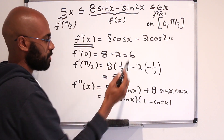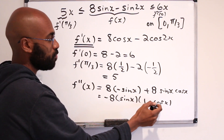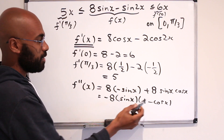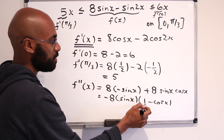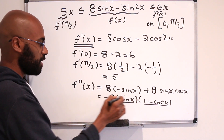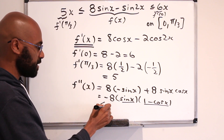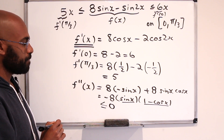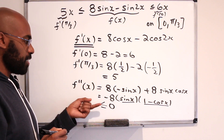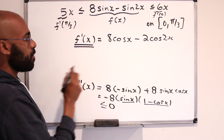On the interval [0, π/3], sin(x) is non-negative and cos(x) is also non-negative. Since cos(x) is bounded above by 1, the quantity (1 − cos(x)) is non-negative. So we have a non-negative value times a non-negative value multiplied by negative 8, which means the second derivative is less than or equal to 0. The second derivative is non-positive, so the first derivative is weakly decreasing.